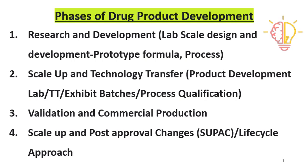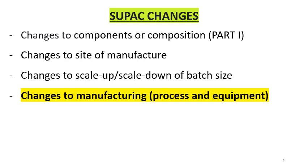In Europe, the same terminology is known as variation. In part 1, we studied changes to components and composition. In part 2, we studied changes to the site of manufacture and changes to batch size — mainly the scale up of batch size from the pilot scale. In this video, part 3, changes to the manufacturing process and manufacturing equipment will be discussed in detail.